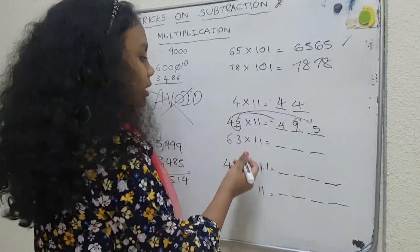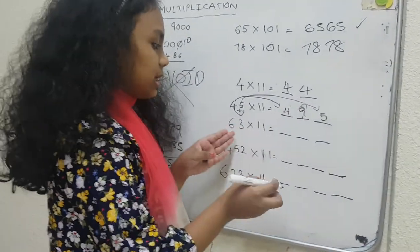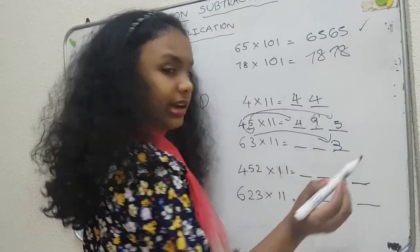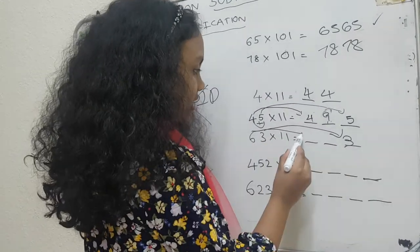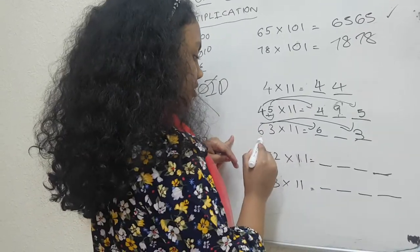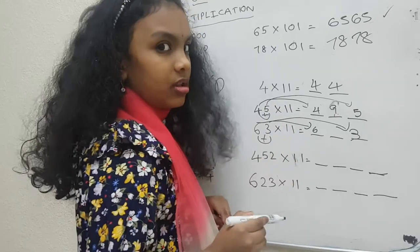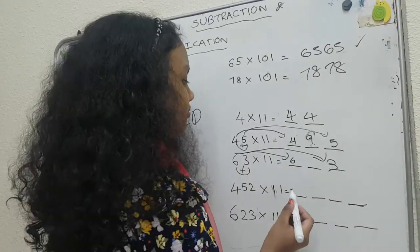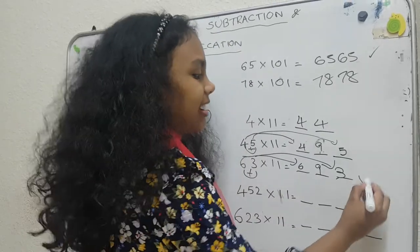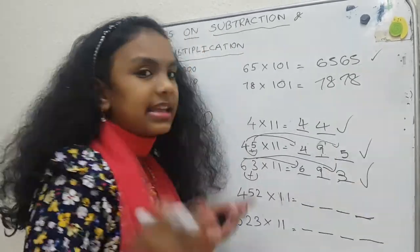495. Now, we have the same trick over here. Put 3 in ones place. And 6 in hundreds place. And when you add 6 plus 3, what is the answer? 9. Yeah. 693 is the right way to do it. And it is the correct answer.